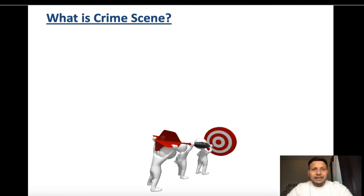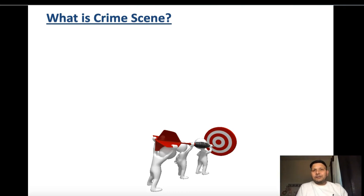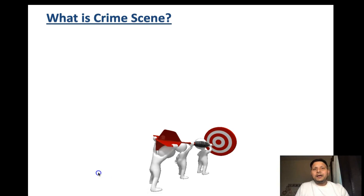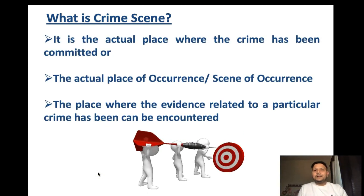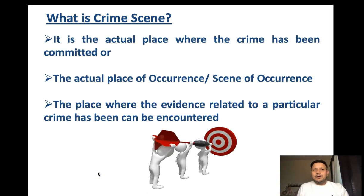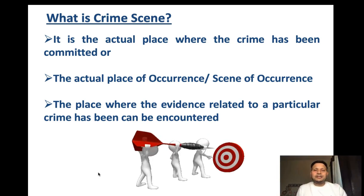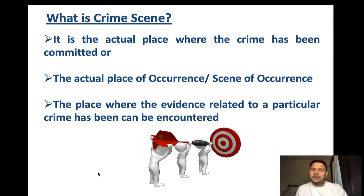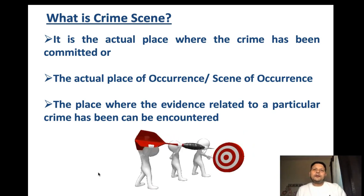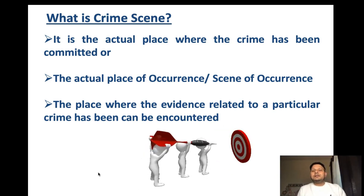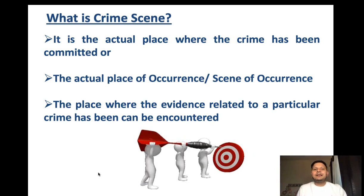This becomes the corpus delicti — the body of crime. Different parts of the crime scene can be identified on the basis of the evidences encountered. As shown on the slide, the crime scene is the actual place where the crime has been committed. We are only able to know this because the majority of the major evidences are lying there.